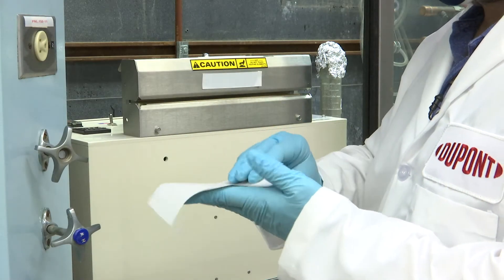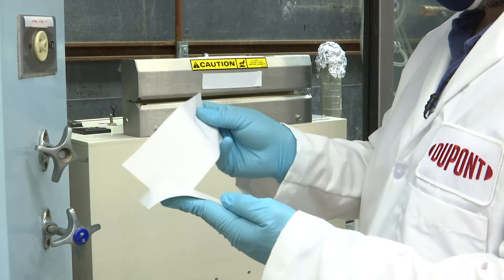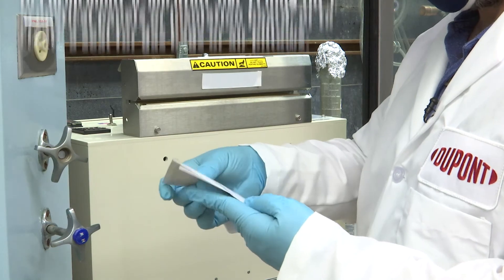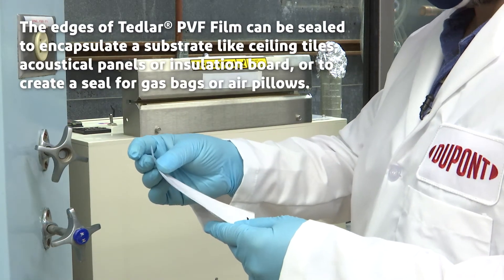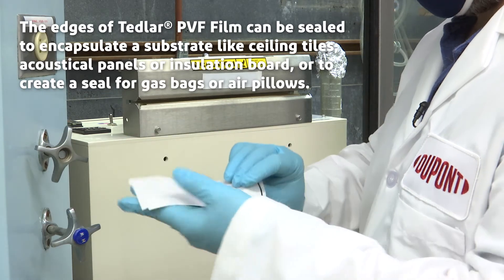Today we're going to be doing some heat sealing with a jaw sealer. This is useful for a variety of applications such as making envelopes, pillows, and even gas bags for different industries.